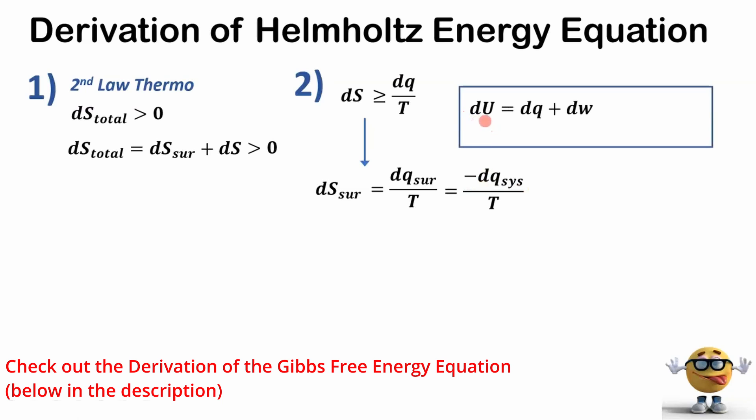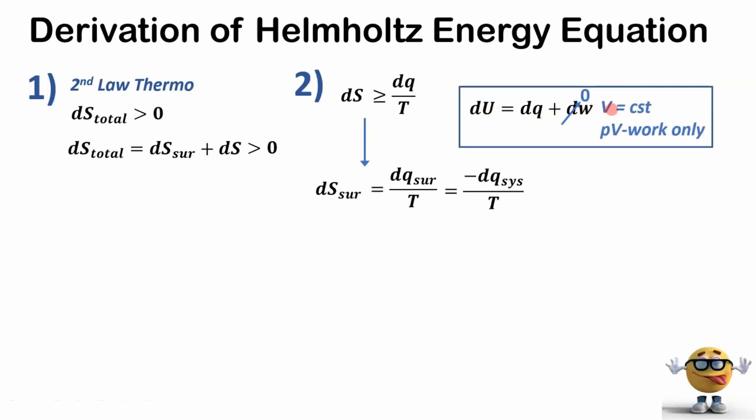From here we're going to use the first law of thermodynamics for a closed system, and we're going to assume two assumptions here: that volume is constant in our process and we're allowing for pressure volume work only. If this is the case, then our internal energy change in differential form equals dq, and we can substitute that so the entropy change of the surroundings equals negative dU over T. We can substitute this dS surroundings into our second law.